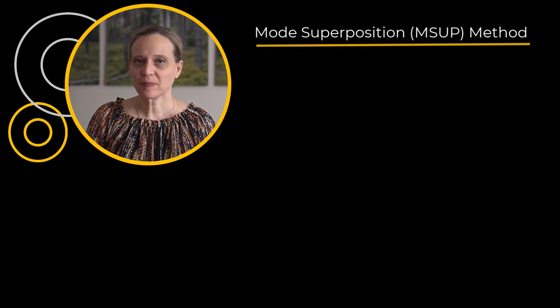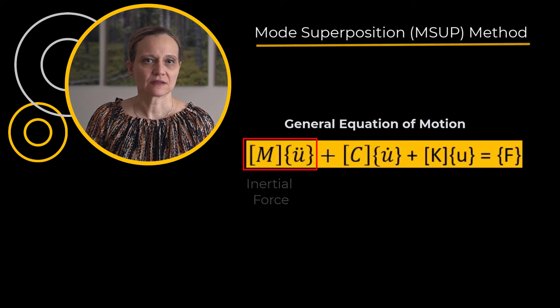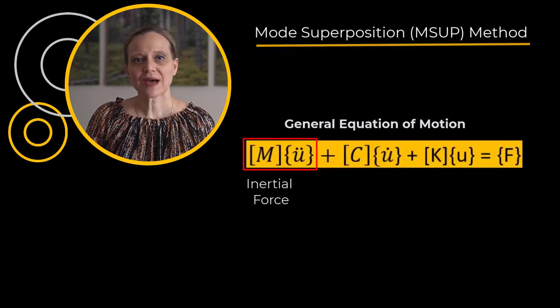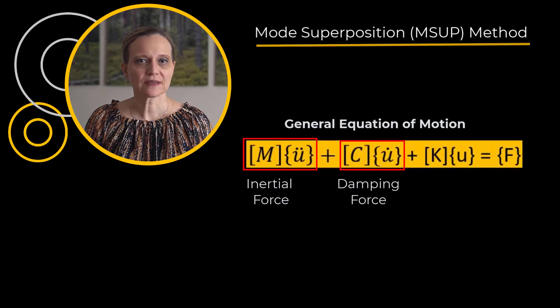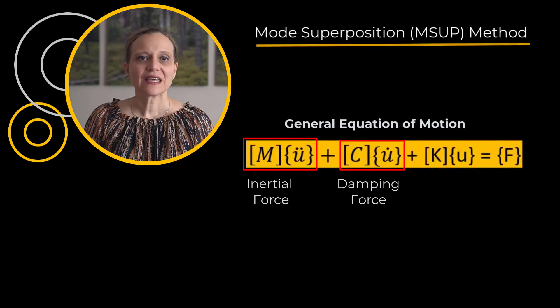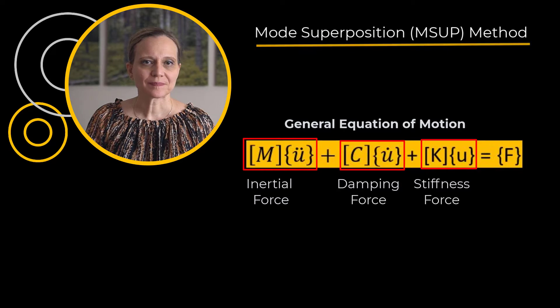Before covering damping in modal-based analysis, let's first have a brief discussion on the mode superposition, or MSUB, method. In the general equation of motion, the first term represents inertial force, which is mass times acceleration. The second term represents damping force, which is a product of damping coefficient and velocity. The third term represents force due to stiffness, which is a product of stiffness and displacement. F represents the applied force.